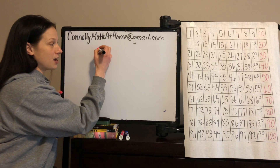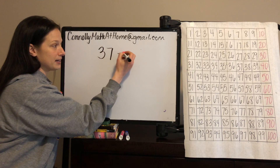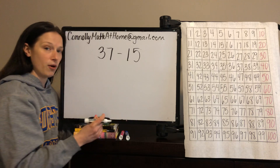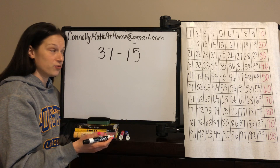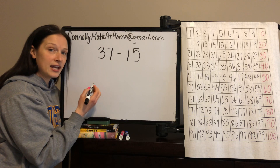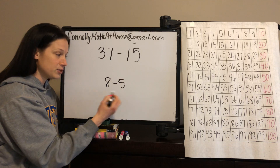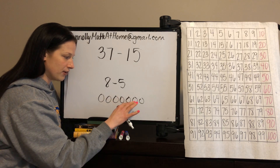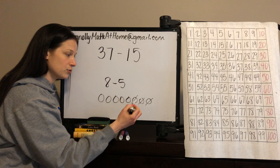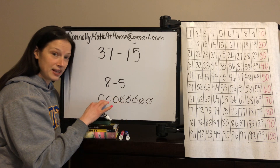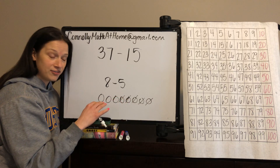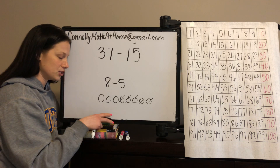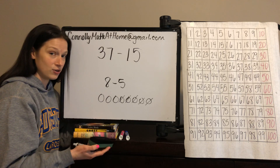Let's talk about 37 minus 15. In the early grades we're going to be thinking about what we know about groups of 10 and the ones place. When you subtract, just like when you did 8 minus 5 — you might have shown all 8, counted 1 through 8, crossed off 5, and saw that there were 3 left over. That's showing all, then crossing off, then counting what's left. We're going to do that same strategy but with tens and ones, thinking about groups of tens and ones and then crossing off like that.